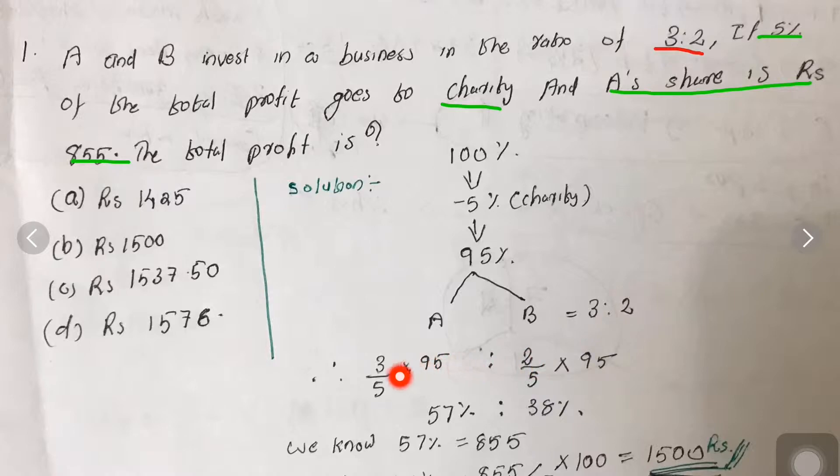The 5 is when there is a ratio, we have to add it: 3+2 is 5. So 3/5 × 95, we will get 57% as A's share, and 2/5 × 95, we will get 38% as B's share.